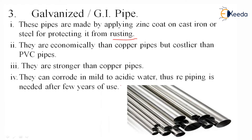The cleaning and maintenance of GI pipes cannot be done using acids, unlike plastic pipes where acidic water can be used for cleaning. GI pipes are not suitable for that practice.